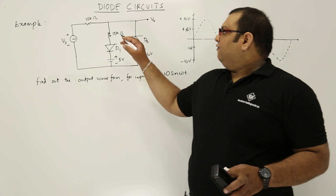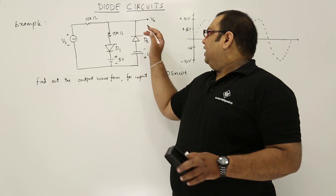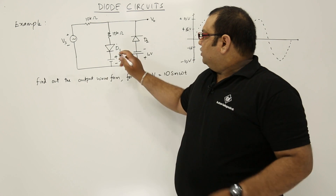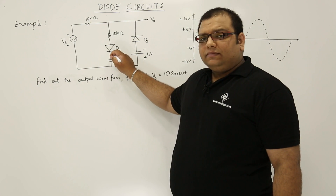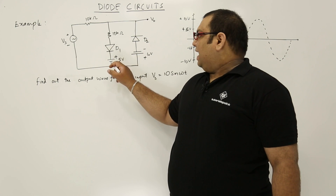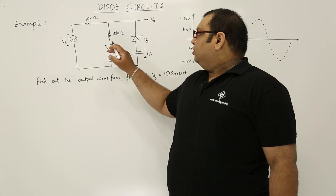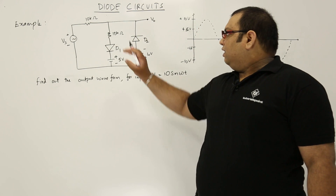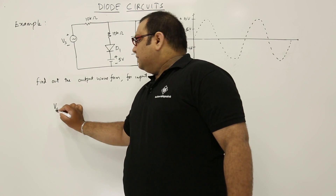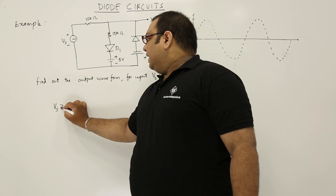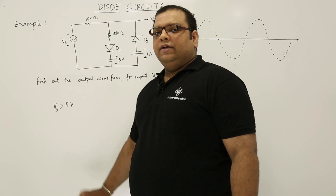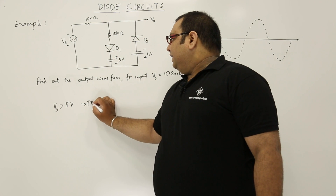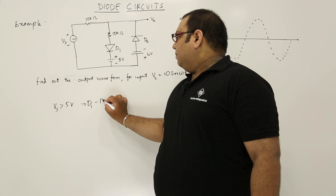To solve this, we need to determine when diode D1 gets forward biased and when diode D2 gets forward biased. If you observe the voltage clearly, for D1 at the negative terminal we have 5 volts, so at the positive terminal we should apply more than 5 volts. Therefore, when Vs is greater than 5 volts, D1 gets forward biased.